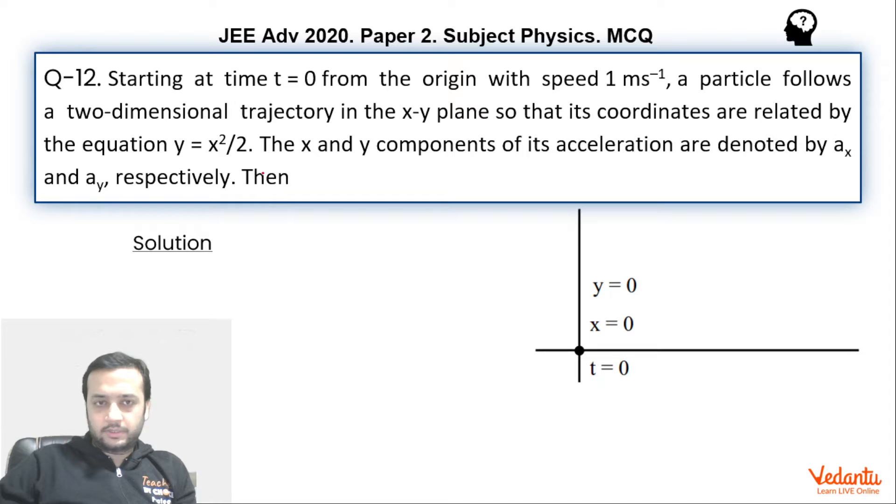So the equation of trajectory is y equals x squared by 2. So if you differentiate this with respect to time, dy by dt which will become velocity in y will become 2x into dx by dt, 2 will cancel out with the denominator. So we are going to get x into dx by dt which is nothing but velocity in x.